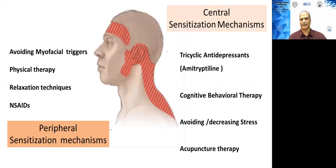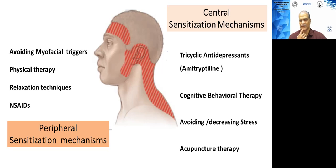Treatment of tension type headache involves targeting both the peripheral and central mechanisms. For peripheral mechanisms, the first step is to avoid all myofascial triggers. Physical therapy is a very important part of management — you can teach the patient relaxation techniques, and for symptomatic relief you can give NSAIDs. For central mechanisms, the only drug proven to be of benefit is amitriptyline. Cognitive behavioral therapy, stress avoidance, and acupuncture have also been shown to be of use.